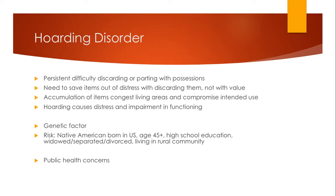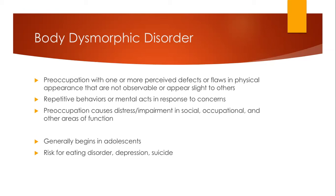Body dysmorphic disorder is often associated with eating disorders, but it is actually an anxiety-related disorder. The DSM-5 criteria is preoccupation with one or more perceived deficit or flaw in physical appearance that is not observable or only slightly observable to others. They often do repetitive behaviors or mental acts in response to those perceived flaws, and their preoccupation causes distress and impairment in social, occupational, and other areas. This generally begins in adolescence. There is a 60% comorbidity between body dysmorphic disorder and anxiety disorder, and it can lead to eating disorders and depression. The suicide attempt rate is very high, between 22% and 24%.